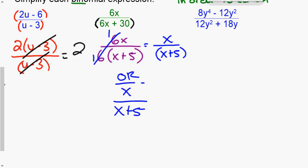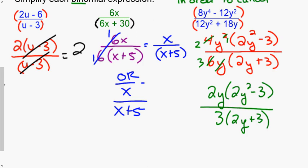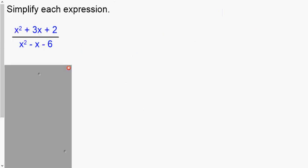Pause the video and try the last one on your own. On the top, we factor out a GCF of 4y squared, leaving (2y squared − 3). In the denominator, we factor out a GCF of 6y, leaving (2y + 3). Now (2y squared − 3) and (2y + 3) look similar but are not identical, so they stay put. Outside, 4 over 6 reduces to 2 thirds. y squared over y gives y to the first in the numerator, since the larger value was on top.